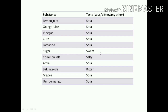Next is sugar - the sugar tastes sweet. Common salt - taste of common salt is salty. Amla is known as 'ona' in Odia. Some grapes are sour, some grapes are sweet. Then unripe mango - mango which is not ripened, that is known as unripe mango. In Odia you can say 'concha'. This unripe mango is sour.